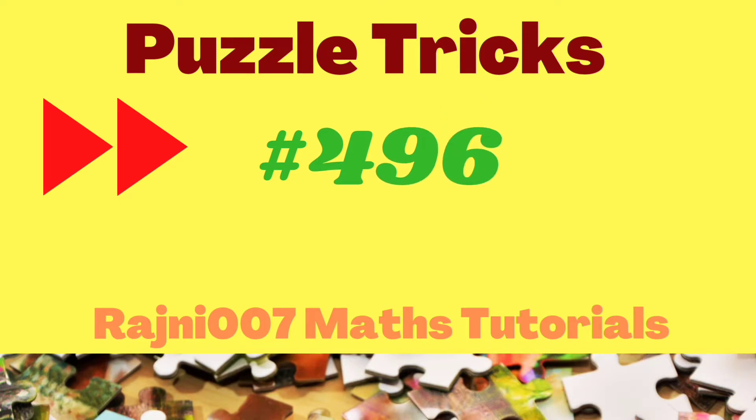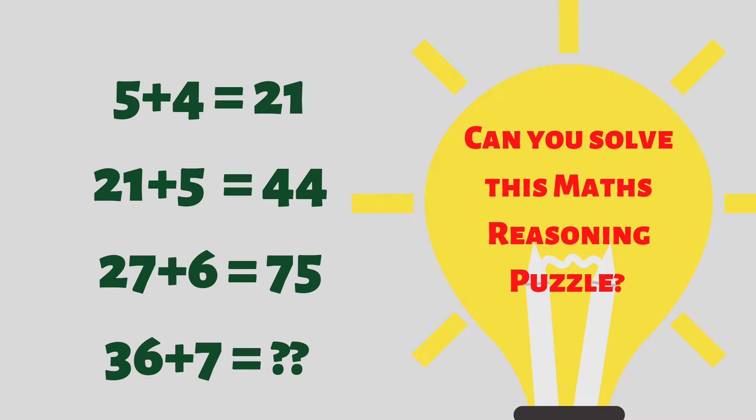Don't forget, today's puzzle is: 5 plus 4 is 21, 21 plus 5 is 44, 27 plus 6 is 75. Then what will be the value of 36 plus 7? Can you solve this math reasoning puzzle?